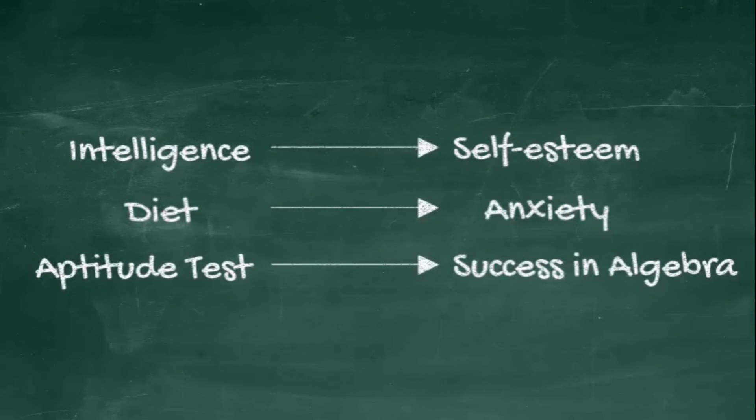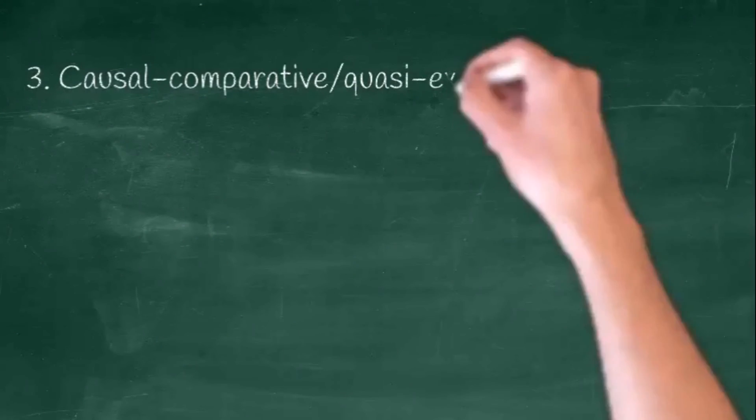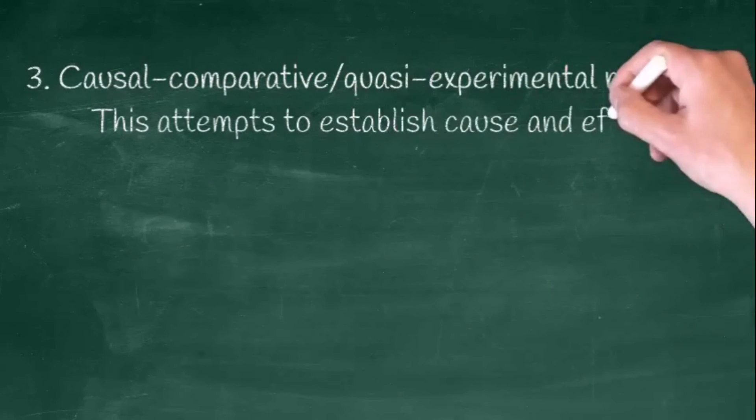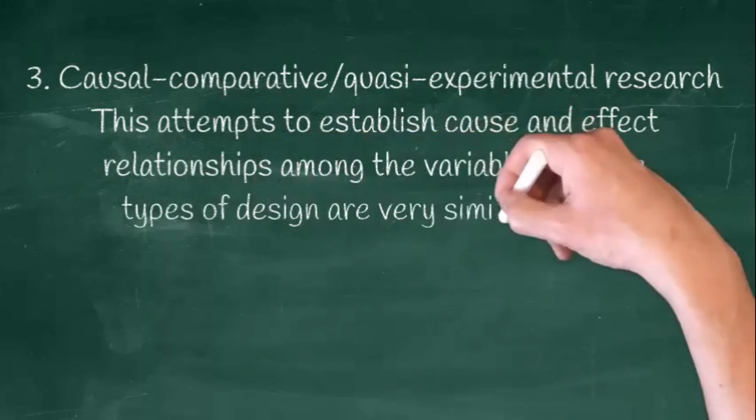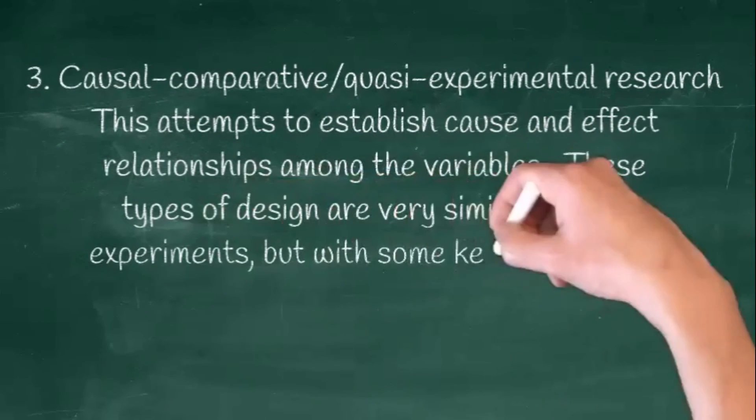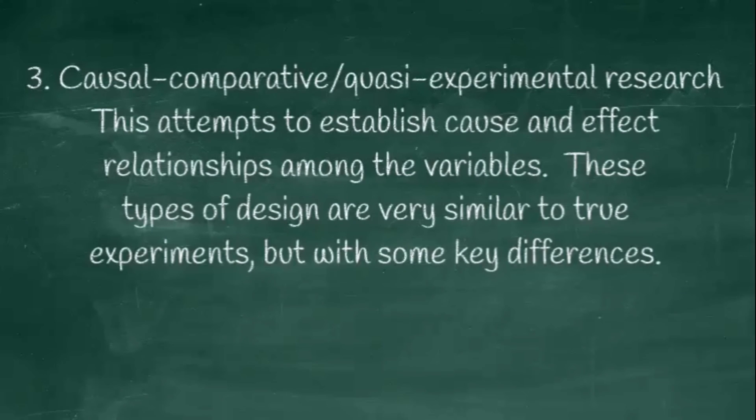The third one is causal-comparative or quasi-experimental research. This attempts to establish cause and effect relationships among variables. These types of design are very similar to true experiments but with some key differences.